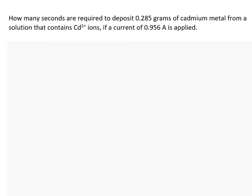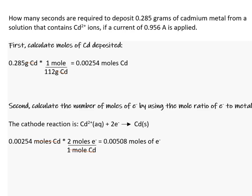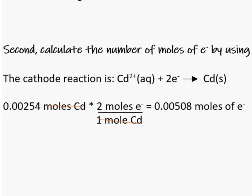Rather than determining the amount of metal deposited, here we are asked to determine the time required to deposit a certain amount of metal. How many seconds are required to deposit 0.285 grams of cadmium using a current of 0.956 amps? First, calculate the moles of cadmium deposited by converting the grams of cadmium to moles. Second, determine the moles of electrons required using the cadmium 2+ reduction half-reaction, which requires two moles of electrons for every mole of cadmium ion.